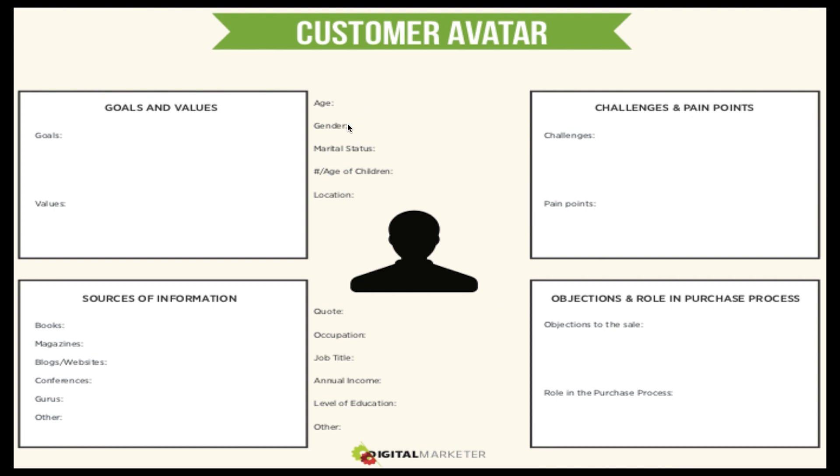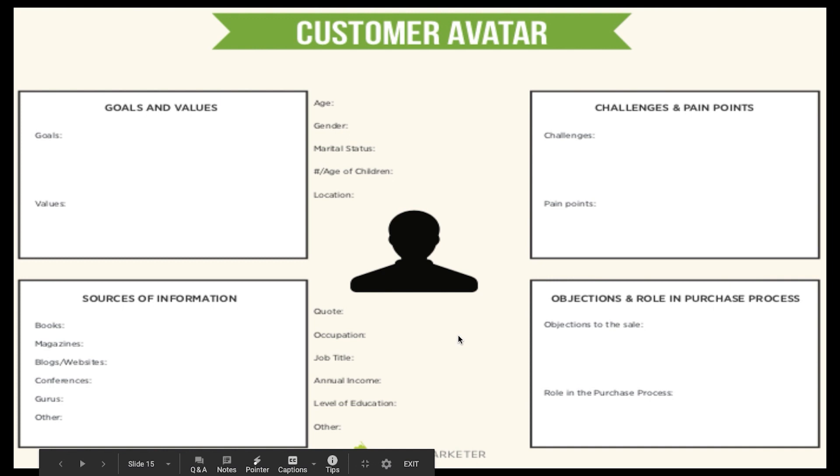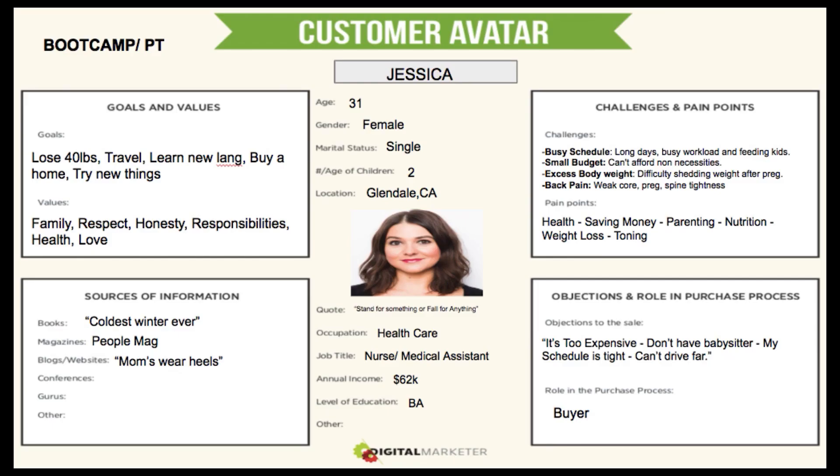Some of this is demographics: age, gender, marital status, number of children, location, favorite quote, occupation, job title, annual income, level of education. I know some of you are thinking this is really in-depth — how do we even get all this information? You make this stuff up based on what your ideal customer looks like. Do some research to get facts on books, magazines, and challenges, but ultimately you're creating an identity.